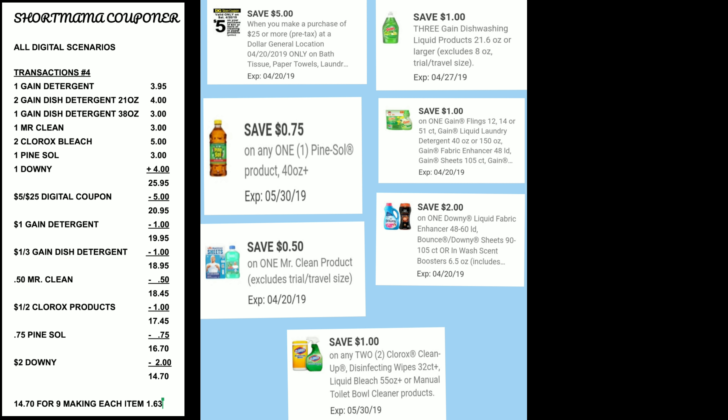The $5 off of $25 brings it to $20.95. The $1 off for Gain detergent makes it $19.95. The $1 off of three for Gain dish detergent makes it $18.95. The 50 cents off for Mr. Clean makes it $18.45. The $1 off of two Clorox products makes it $17.45. The 75 cents off for Pinesol makes it $16.70. The $2 off for Downy makes it $14.70 — for nine items, each item $1.63.